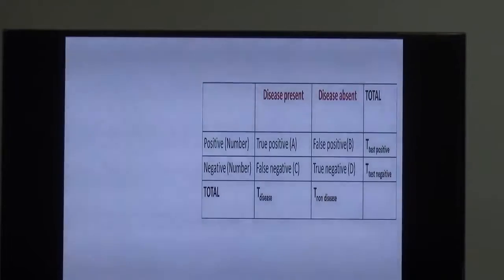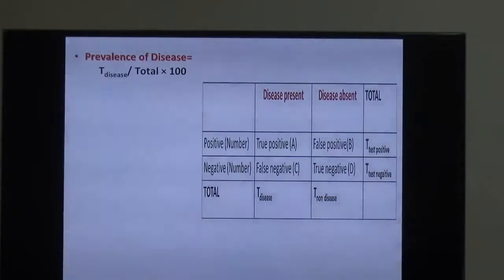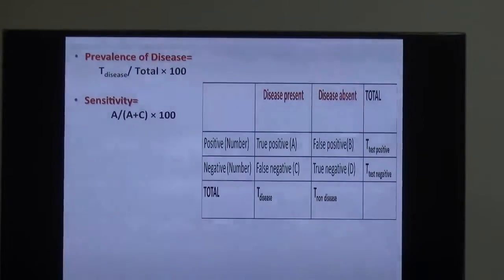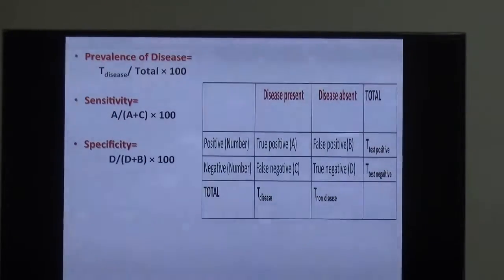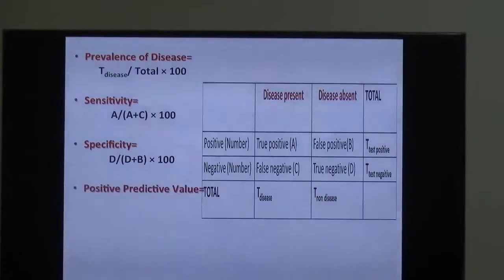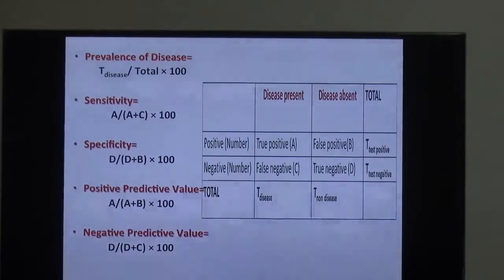Prevalence of the disease is calculated as total number with the disease over total population, multiplied by 100 to give a percentage. Sensitivity is true positives over true positives plus false negatives, times 100. Specificity is true negatives over true negatives plus false positives, times 100 to give a percentage.